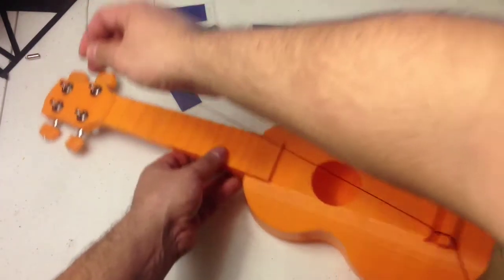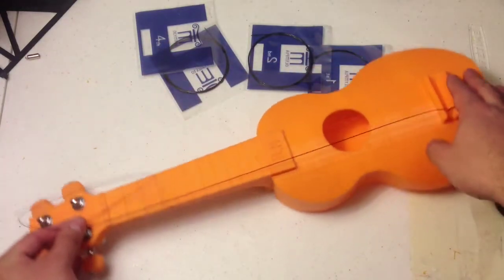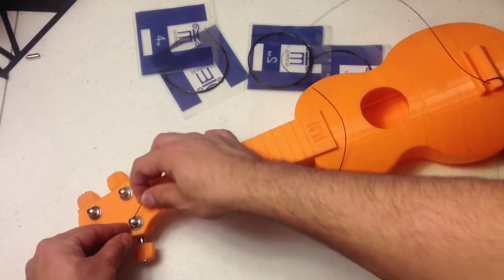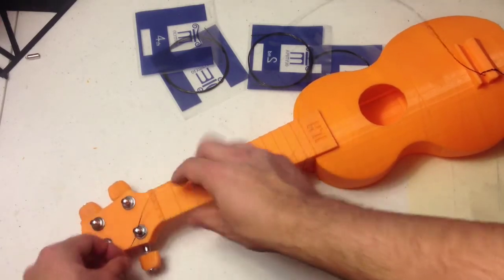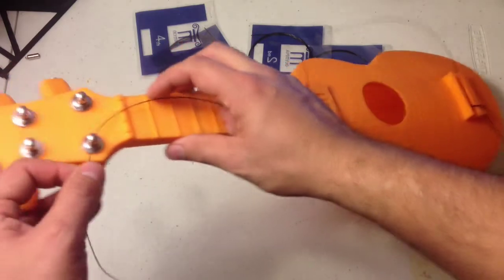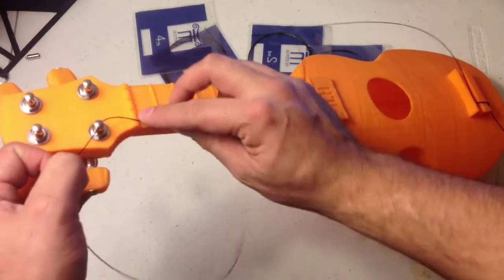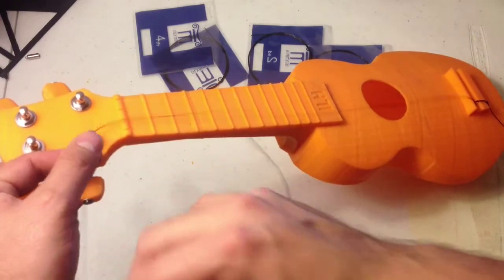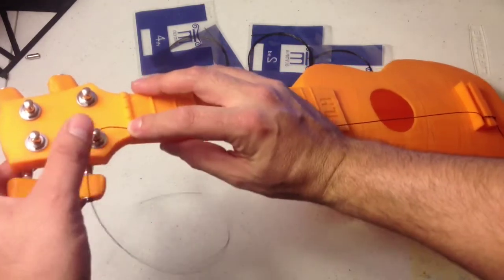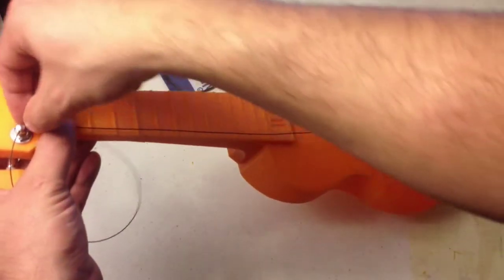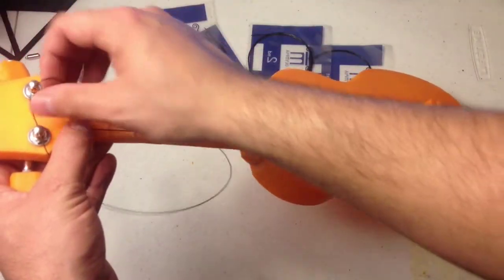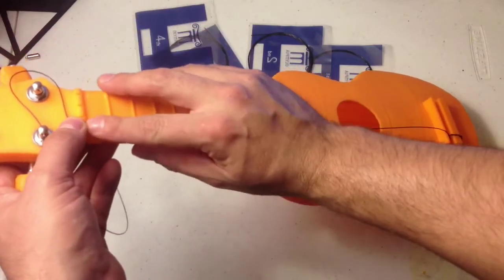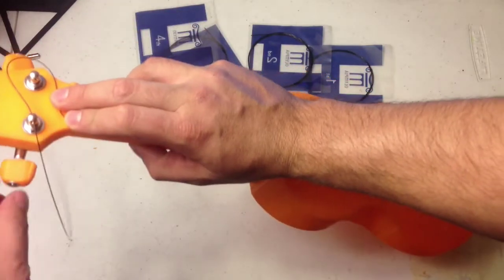And then on the other side here now, it's really simple. You just feed it through the hole in the tuner itself, and then there's these notches for each of the strings, so you start with the fourth. So I pull it tight just to see where it should be, and then I like to have a bit of loops around the tuner itself.